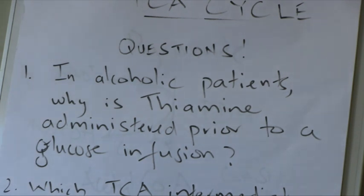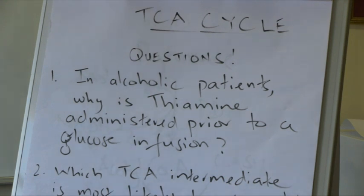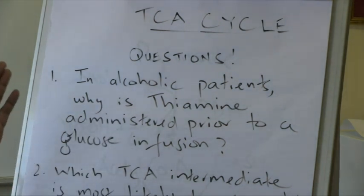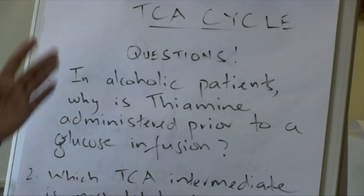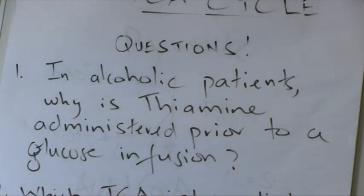We're going to start off with the TCA cycle, which obviously means the tricarboxylic acid cycle, also known as the Krebs cycle. Remember that parts one and two dealt with the glycolysis pathway, and that of course feeds into the TCA cycle. So question one: in alcoholic patients, why is the vitamin thiamine administered prior to a glucose infusion?